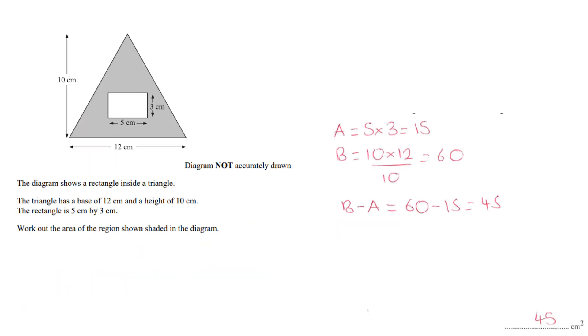And here is your solution for this one. So A then is that rectangle which is 5 times 5 times 3 which gives you 15. The whole triangle is 10 by 12 which is 120, and then it's been divided by 2 there, but whoever's written this working out has written 10, so that should say divided by 2 there.